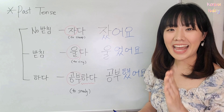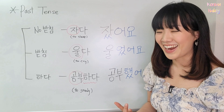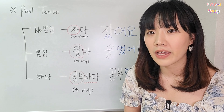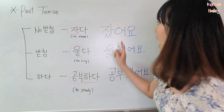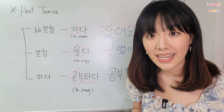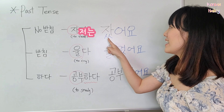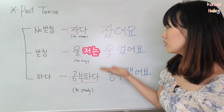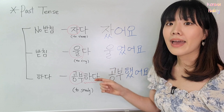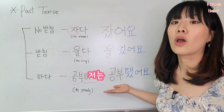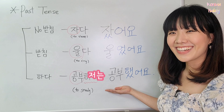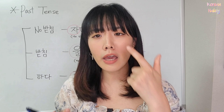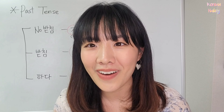Great job, everyone! Now you understand how to change to past tense. Let's make some simple sentences. I slept: 저는 잤어요. I cried: 저는 울었어요. I studied: 저는 공부했어요. We know how to say all of those now.